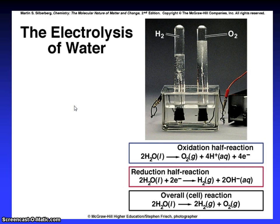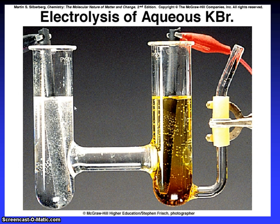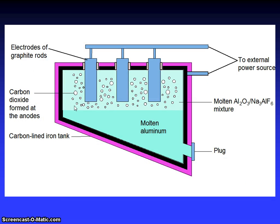Electrolysis of water. You see the oxidation half-reaction, reduction half-reaction and overall reactions. Electrolysis of aqueous KBr, electrodes of graphite rods to external power supply, molten Al2O3 plug, molten aluminum, carbon dioxide formed at the anode, and carbon-lined iron tank.